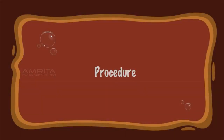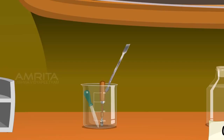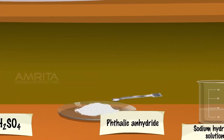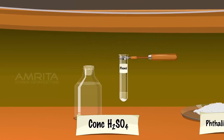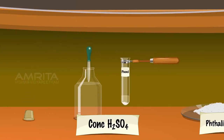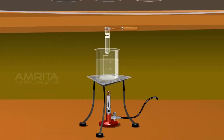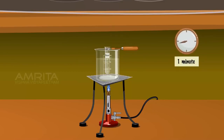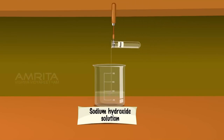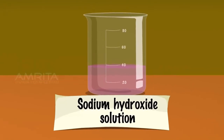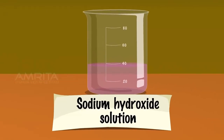Phthalein dye test. Procedure: Take a small quantity of phenol in a test tube. Using a spatula, take a small quantity of phthalic anhydride and add it into the test tube containing phenol. Using a dropper, add a small quantity of concentrated sulphuric acid. Heat the contents in an oil bath for about 1 minute. Pour the reaction mixture carefully into a beaker containing sodium hydroxide solution. On heating, phenol reacts with phthalic anhydride in the presence of sulphuric acid to produce phenolphthalein, which is colourless. Phenolphthalein gives a pink colour with an alkali such as NaOH.